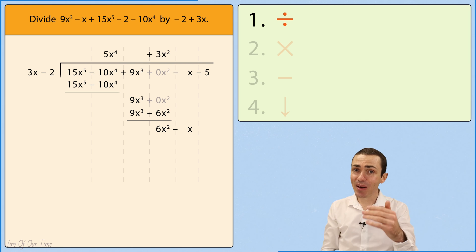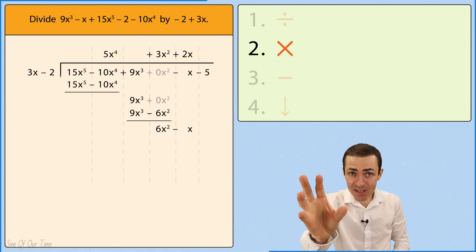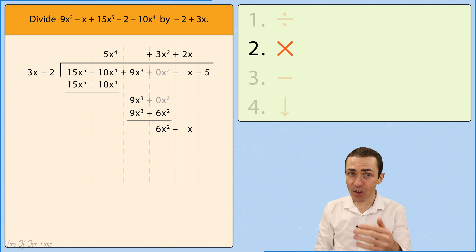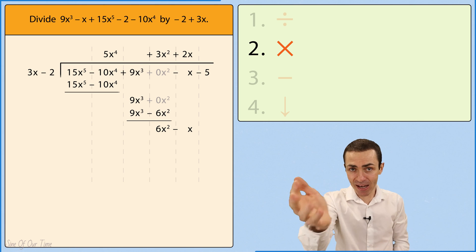6x squared divided by 3x gives us 2x. We take that 2x and we multiply by the divisor of 3x minus 2 in order to give us 6x squared minus 4x.